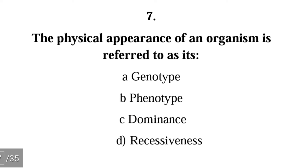Number seven: the physical appearance of an organism is referred to as its — genotype, phenotype, dominance, or recessiveness. The correct answer is B, phenotype. The phenotype refers to how you look and how you behave.